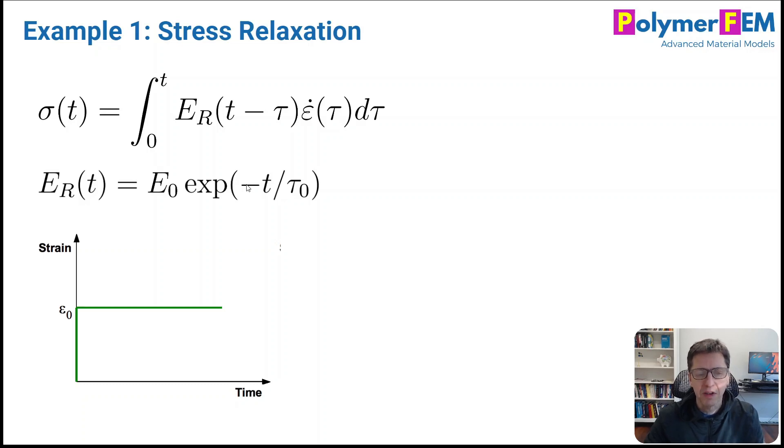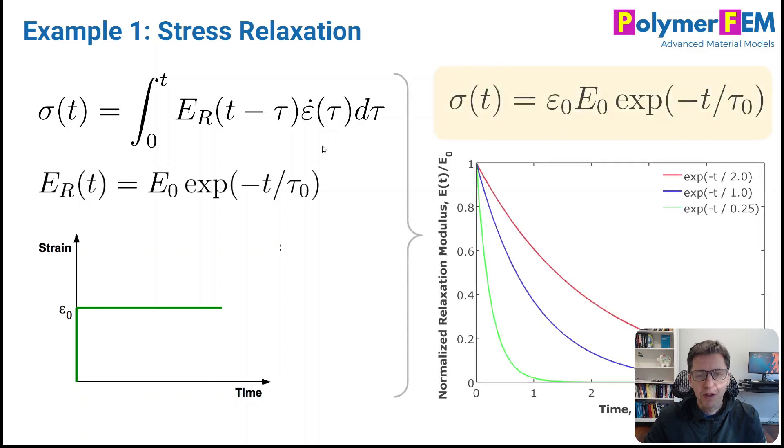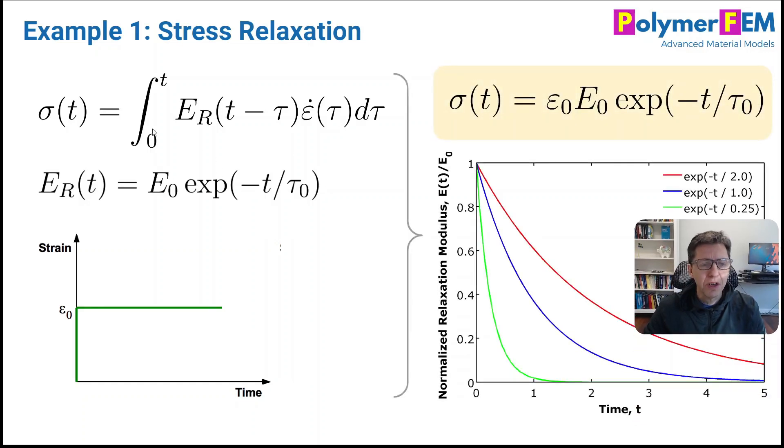So we'll talk more about this and how this is related to a proni series later on. But if you put these together, I can insert this equation into this integral. And the beauty is that the integral of an exponential function is also an exponential function. So you can very quickly see that, if you do the math, that the stress as a function of time in this case becomes this. It's an exponentially decaying function of this kind. And I plotted it down here. Depending on what tau series you get different rates of relaxation. So this is very simple. It goes back to the definition of the relaxation modulus.